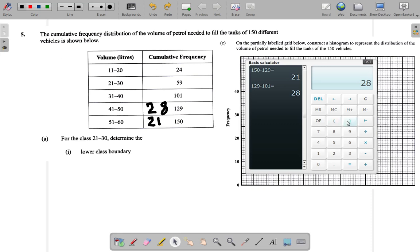159 plus 28 would give the 129. 159 plus what give you the 101? I would have to say 101 minus 59 is 42. So the recorded number here is 42.